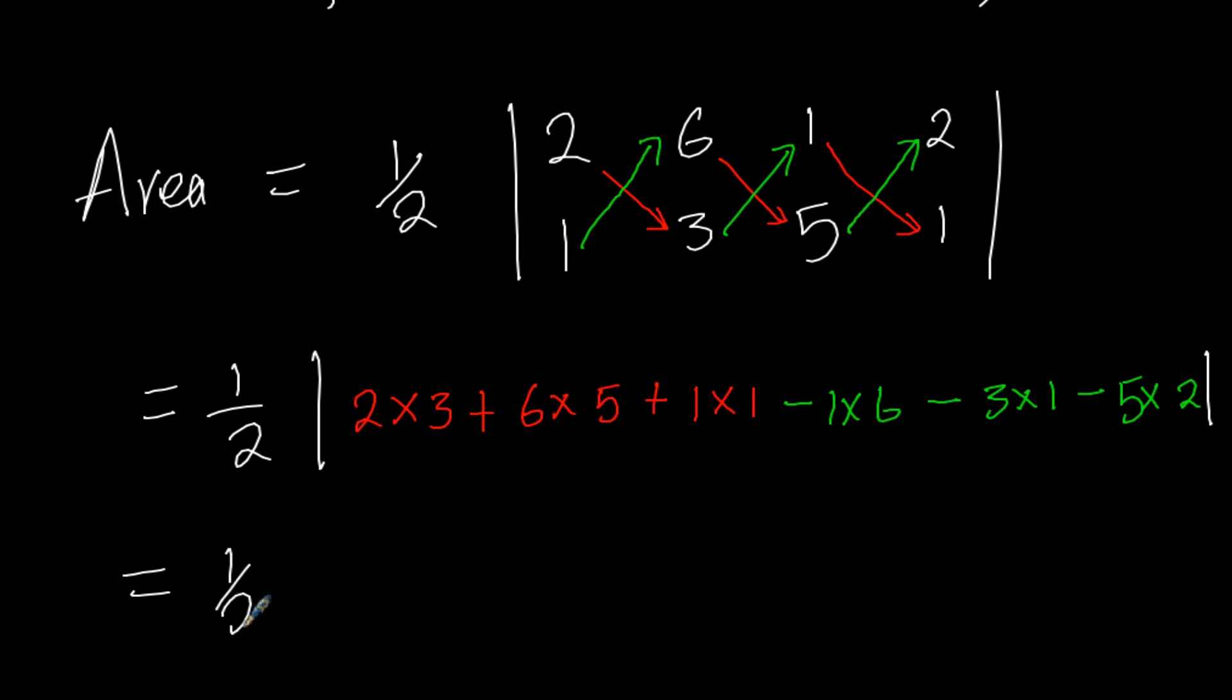That we simplify, that will be a half into this red part. We have 6, we have 30 here, and we have 1, so that will be giving us 37. Then minus, here we have 6, we have 3, and we have 10, and that should be 19. So we shall say minus 19.